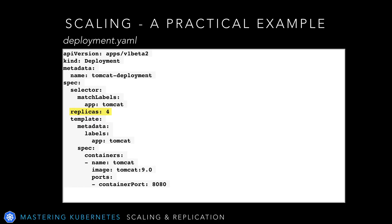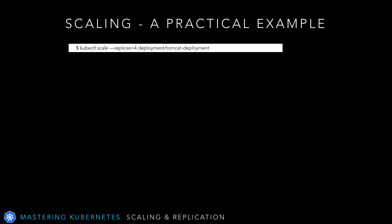By setting replicas to four, we have specified for this deployment that we'll have four replicas of the Tomcat pod running. This can provide redundancy and more capacity in a properly architected application. We could either create an entirely new deployment or use a Kubernetes scale command to scale our existing deployment. Issuing this command modifies the deployment to have the exact same effect, but saves us from having to delete and recreate it, and avoids any downtime during that switchover. The kubectl scale command will set our existing Tomcat deployment to four replicas.